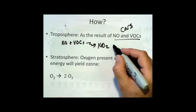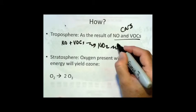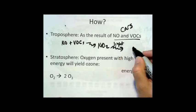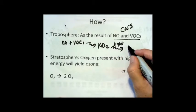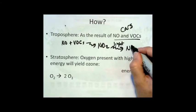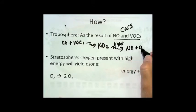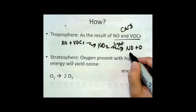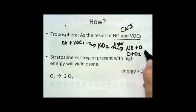And in the presence of light, the nitrogen dioxide breaks down to give you the NO and the single atom oxygen, which is very reactive. And that single atom oxygen that's produced in the presence of light will very quickly react with the oxygen in the atmosphere to produce ozone.